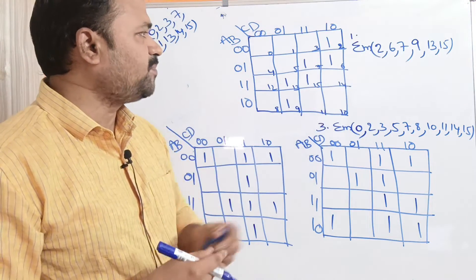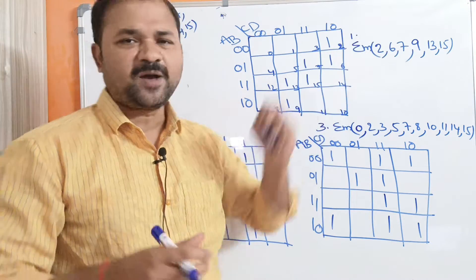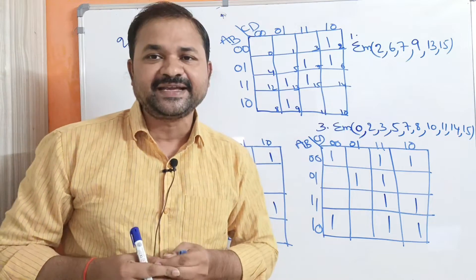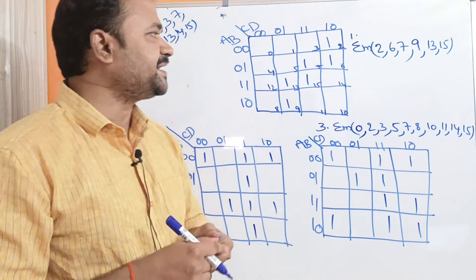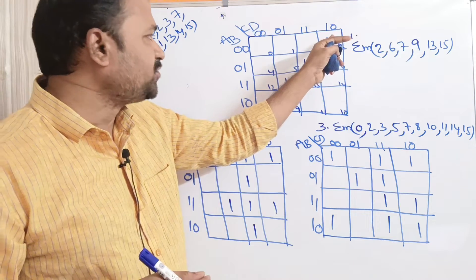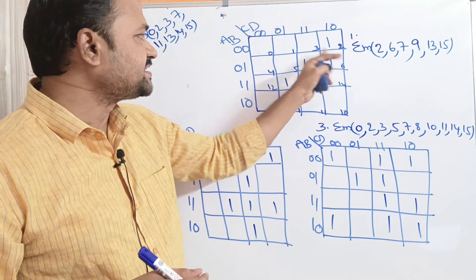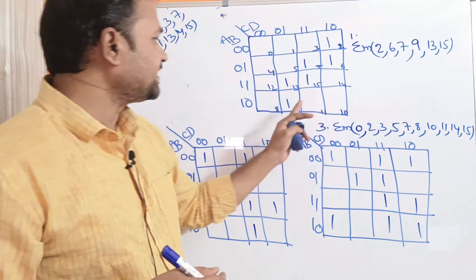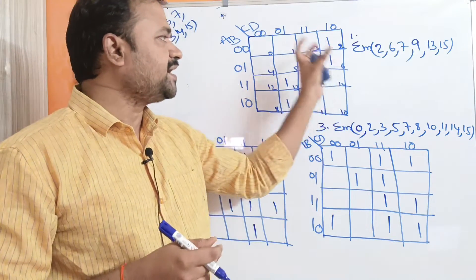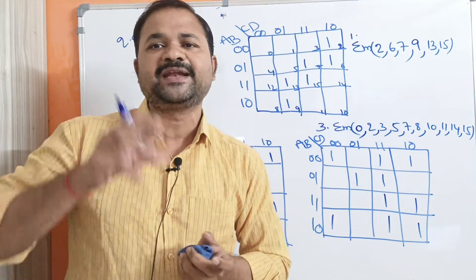Let us solve the first problem. Sigma means sum operation, and M means minterms. So the minterms are 2, 6, 7, 9, 13, and 15. We write 1 in cell 2, then cells 6, 7, 9, 13, and 15. The table is now completely mapped.